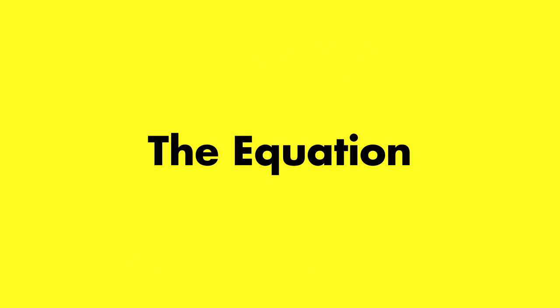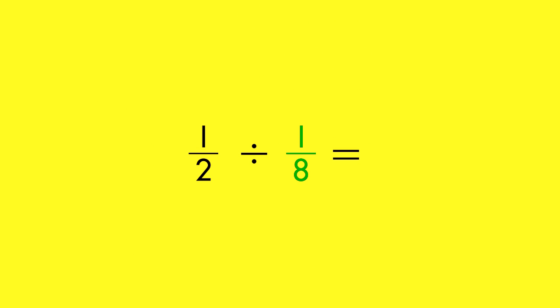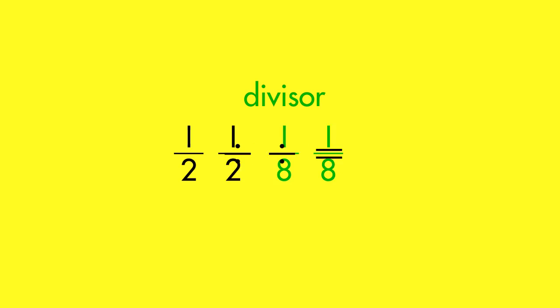We can solve this problem mathematically by changing the divisor to its reciprocal. When you use the reciprocal, you must also switch the operation from division to multiplication.